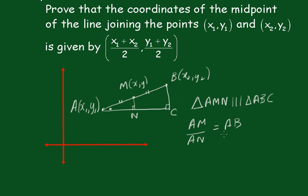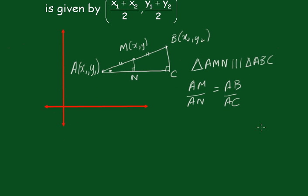Triangle ABC, because the corresponding sides are proportional. We know that AN, this one here AN, is x minus x₁. And we know that AC is x₂ minus x₁.